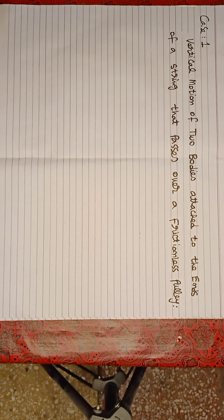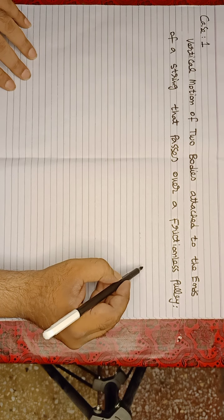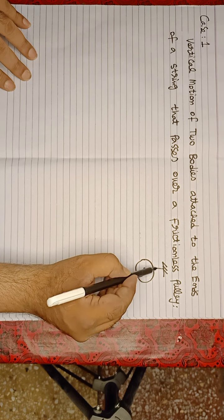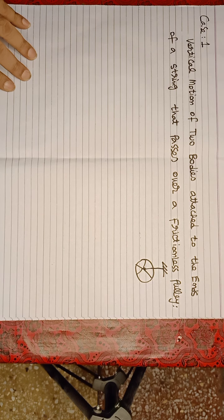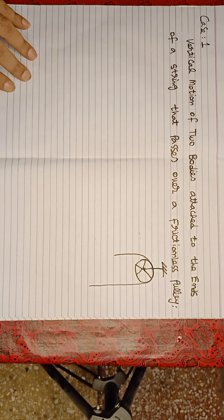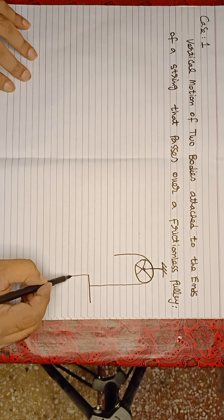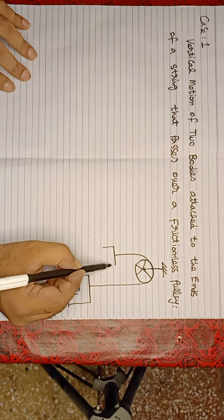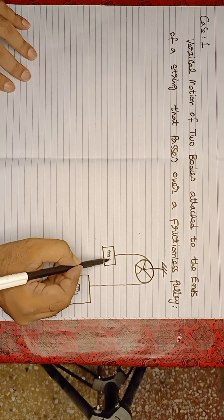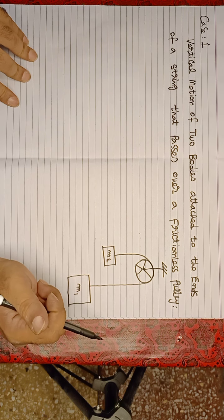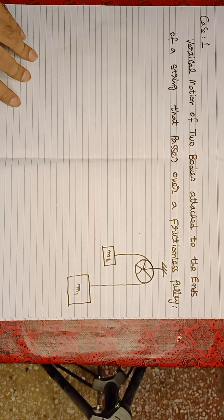Vertical motion of two bodies attached to the ends of a string that passes over a frictionless pulley. First of all, we draw a frictionless pulley. After this, we draw a string which passes over the pulley. One end we attach mass M1 and the other end we attach mass M2. Note that M1 is heavier and M2 is the lighter one.